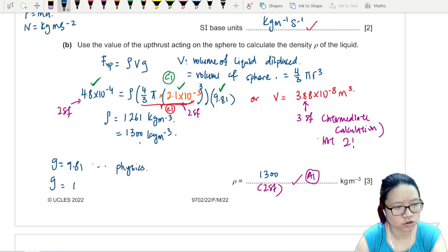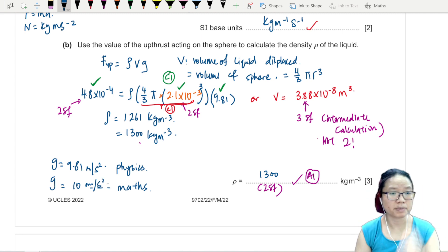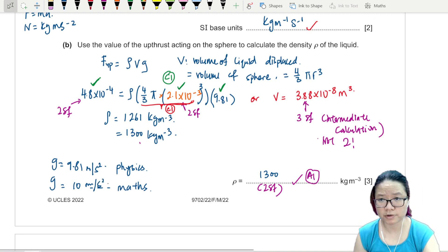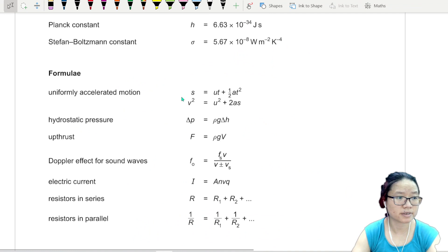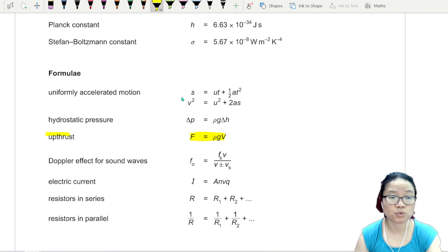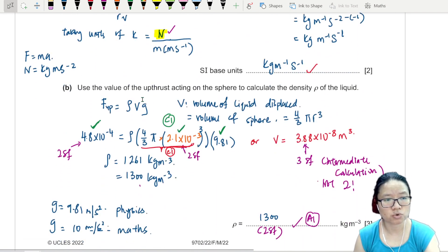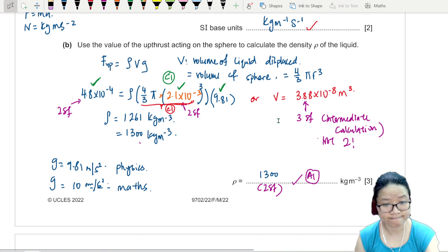Never use your G as 10. G is not 10 in physics. 9.81 is what we use. In your maths paper, G is 10, but G is 9.81 in physics. Please know what paper you're doing. So that's part B. It's pretty straightforward - just make sure you do carefully and don't make mistakes. You may not even need to remember the equation because this equation is given in this part.